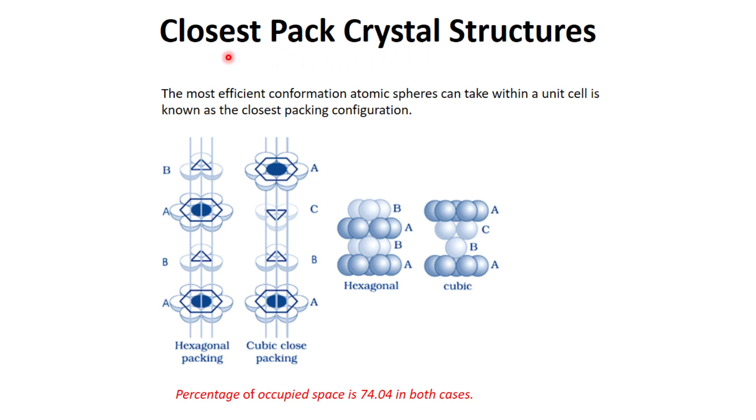Closest is the superlative form of close, meaning this is the most efficient configuration atomic spheres can take within a unit cell, and it is known as the closest packing configuration.